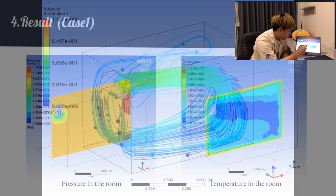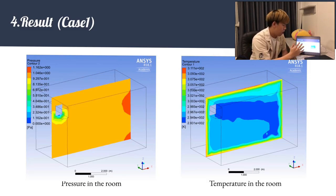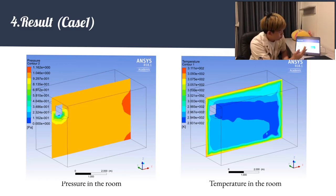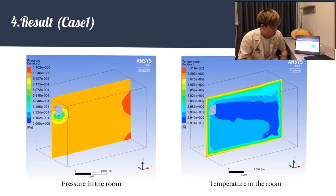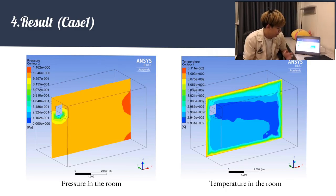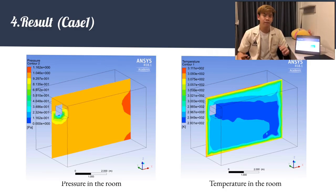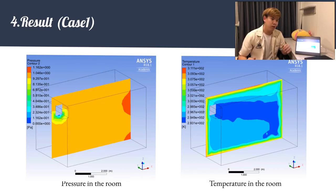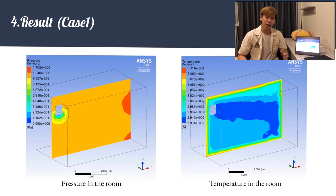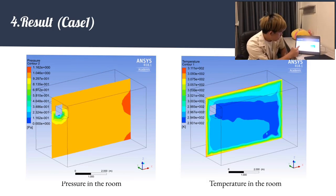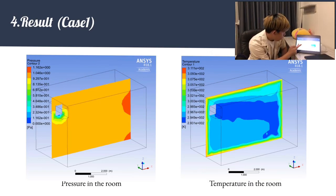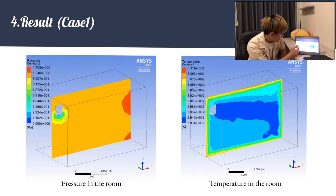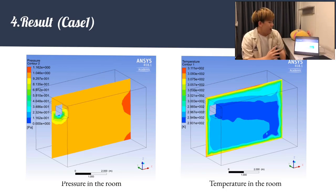For Case 1, the temperature is quite high on the opposite side from the air conditioner, while the middle of the room is cooler than other parts. For pressure, as Bernoulli's equation states, high velocity gives low pressure and vice versa. The area behind the air conditioner where air speed is low shows higher pressure compared to the region where the wind is blowing.